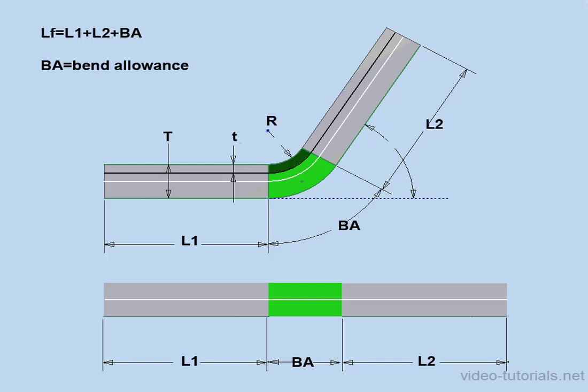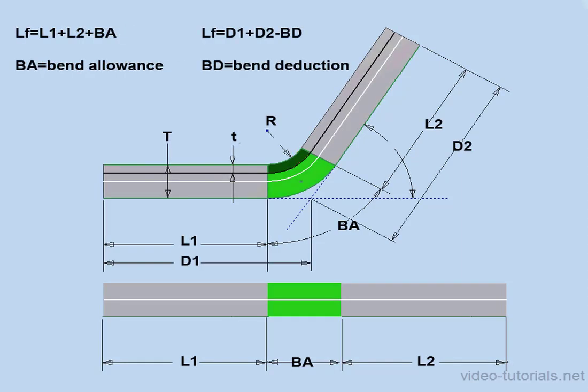Another method is called the bend deduction method. Here's the formula: the flattened length of the part equals D1 plus D2 minus the bend deduction. As with bend allowance, bend deduction comes from the same sources — tables, testing, etc. It's easy to see how these methods are related to each other based on the formulas shown on screen.